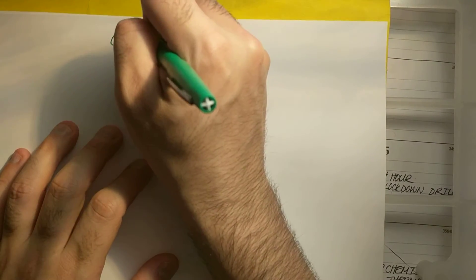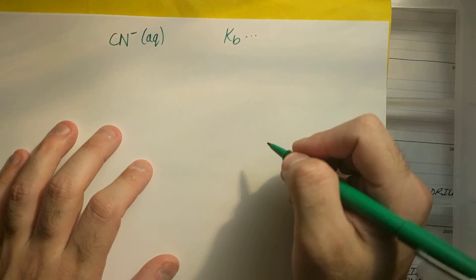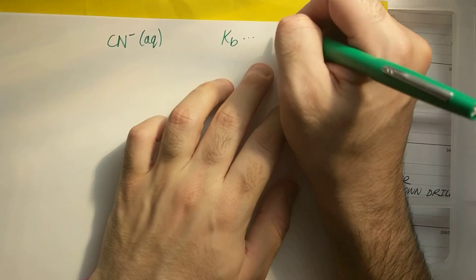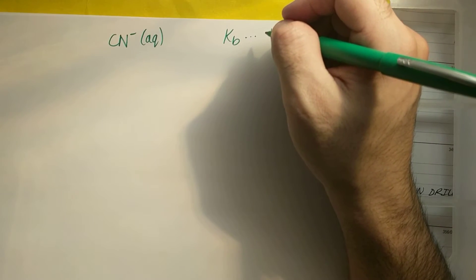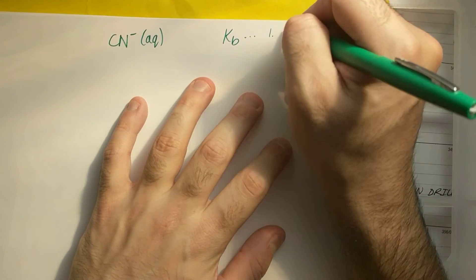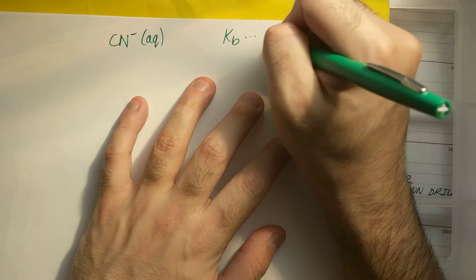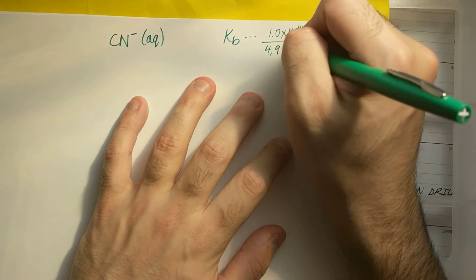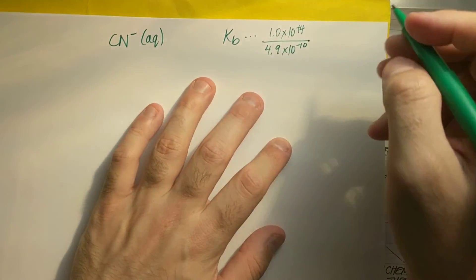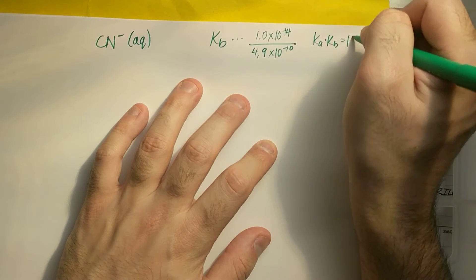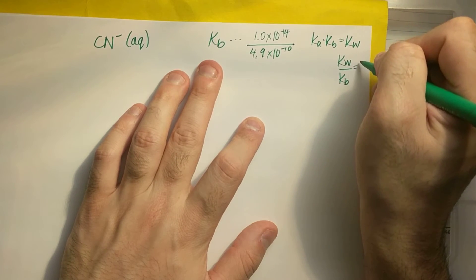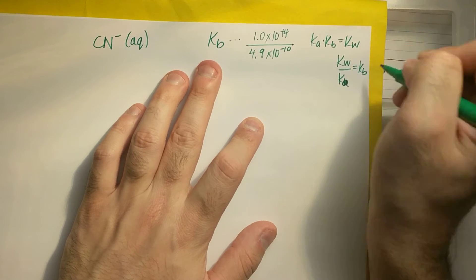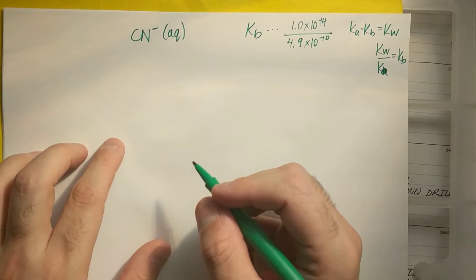What if I were to just have a base like CN minus aqueous? And that has some KB that's really small. If I have to figure out the KB, it would be 1.0 times 10 to the minus 14th. I'd have to divide that by 4.9 times 10 to the minus 10th. Because KA times KB is equal to KW. And so if I want KB, it'd be KW over KA is equal to KB.